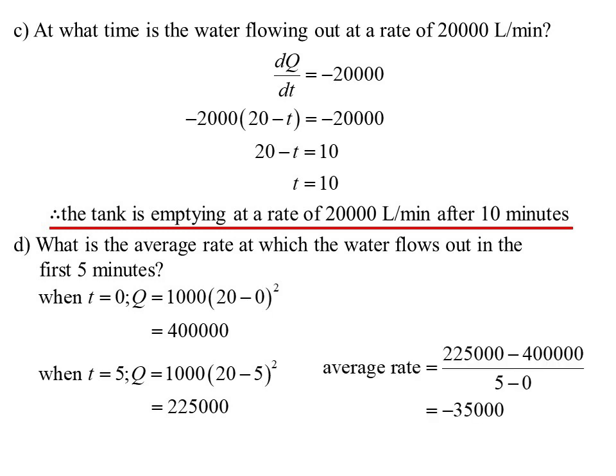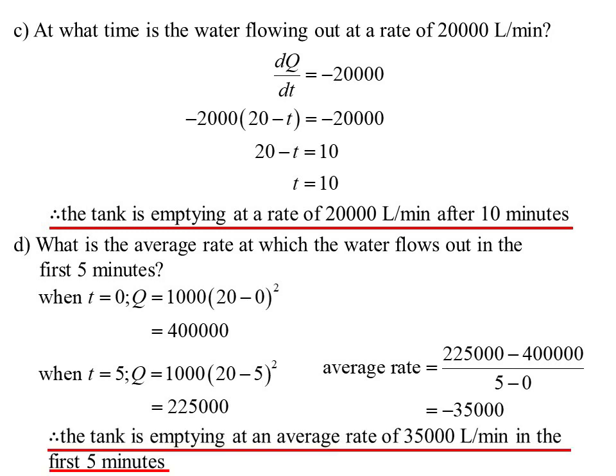So the average rate, bit like finding the slope, because remember it's the slope of the secant, so the difference in the Q over the difference in the t, and we get negative 35,000. So we know it's emptying, going down, negative, but at an average rate of 35,000 litres per minute.